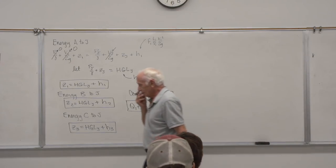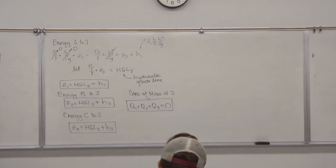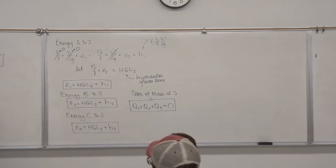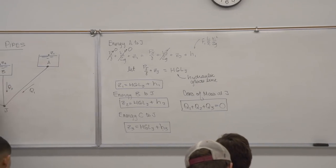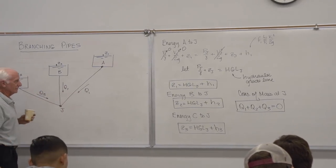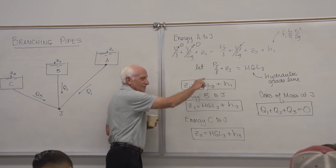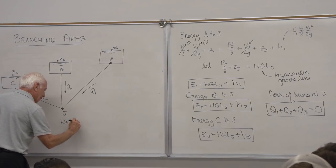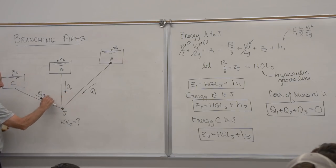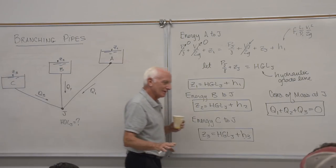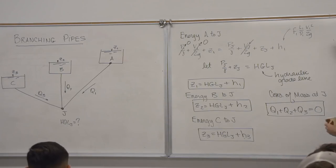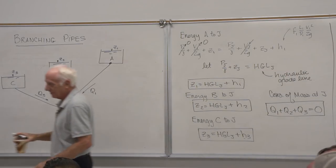We have four equations and four unknowns: Q1, Q2, Q3, and the hydraulic grade line at J. Theoretically we can solve those algebraic equations. We'll work a problem with numbers to see how that cranks out.